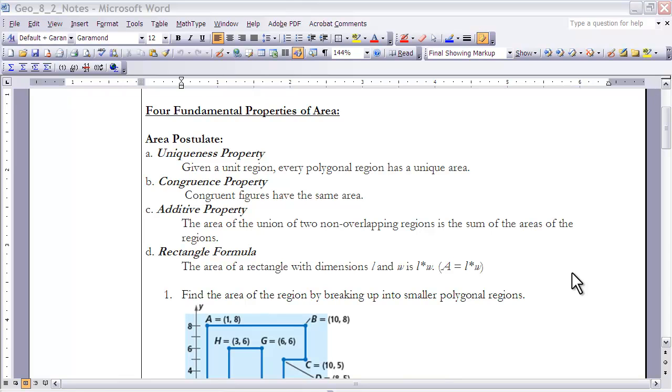So the four fundamental properties of area and the area postulate - from your reading you should have filled out this section of your notes including all of the missing information. But I'd like to just take a minute to talk about each one of these different properties and just summarize them. The first is uniqueness property. What the uniqueness property tells us is that if you have a polygon and a region of that polygon, the area of that polygon is unique, meaning that there is only one area for any given polygon.